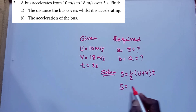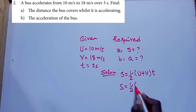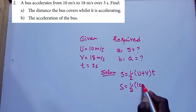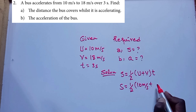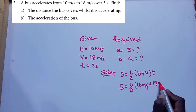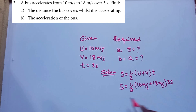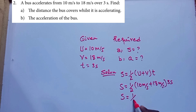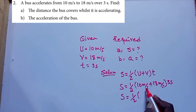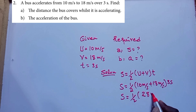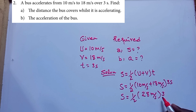Distance is equal to 1 over 2 times (10 m/s plus 18 m/s) times 3 seconds. So distance is equal to 1 over 2 times 28 m/s times 3 seconds.